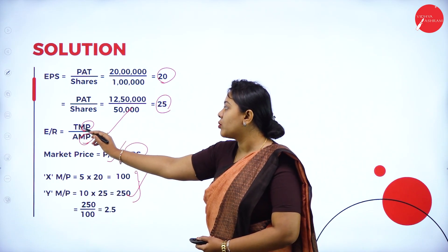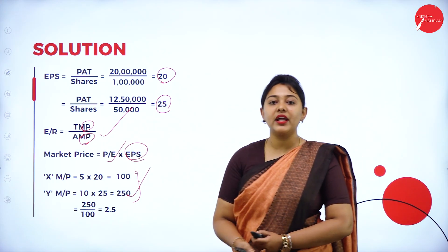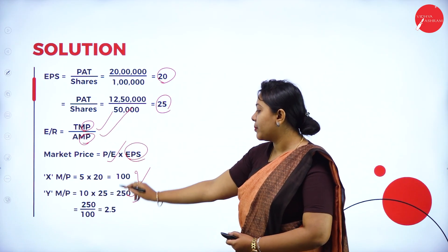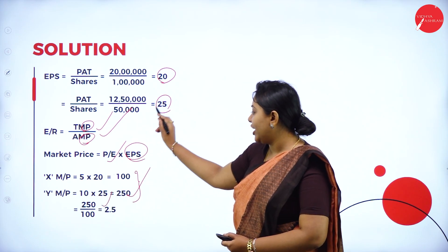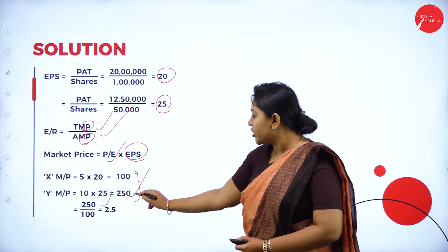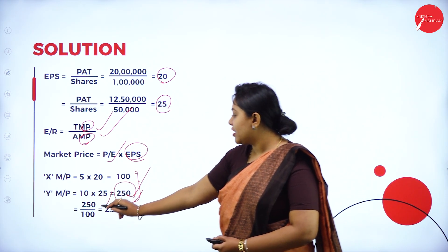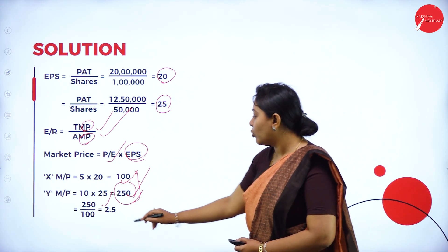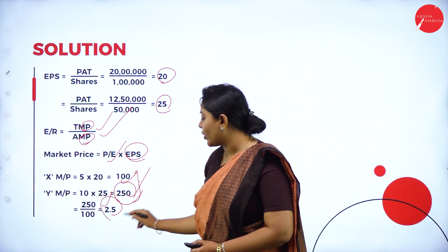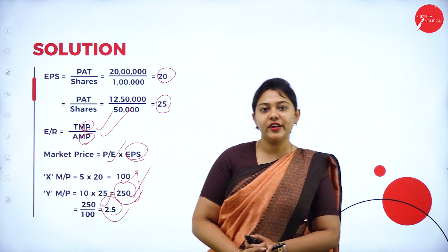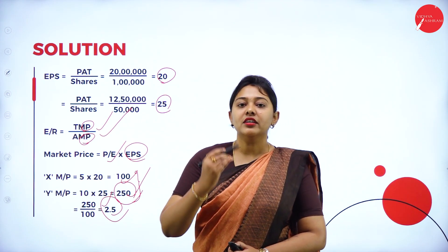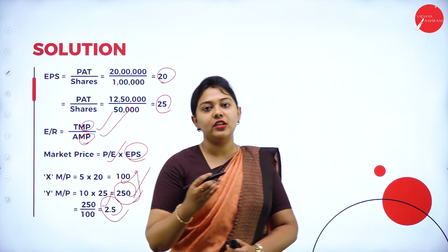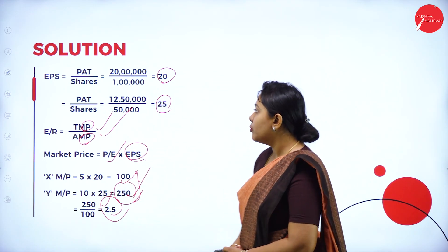Substituting the EPS values, you get the market price. Exchange ratio = target market price divided by acquirer market price. Target company market price is 250 and acquirer company market price is 100. The exchange ratio is 2.5. This is the calculation of exchange ratio based on market price valuation.